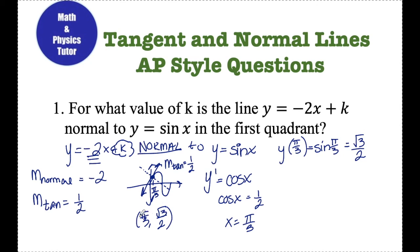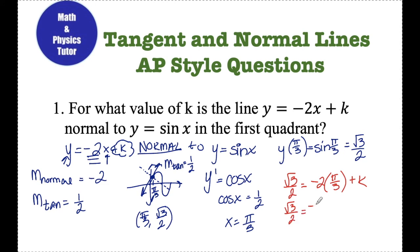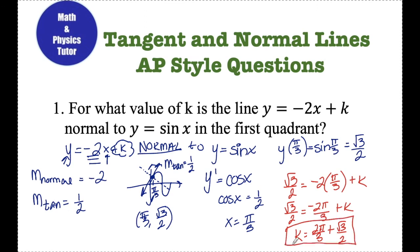At this point, I can plug pi over 3 in for x and rad 3 over 2 in for y, which will allow me to solve for k. So rad 3 over 2 equals negative 2 times pi over 3 plus k. I add the 2 pi over 3 over and I end up with this value for k. I can't simplify that further — this is the k value I was looking for.